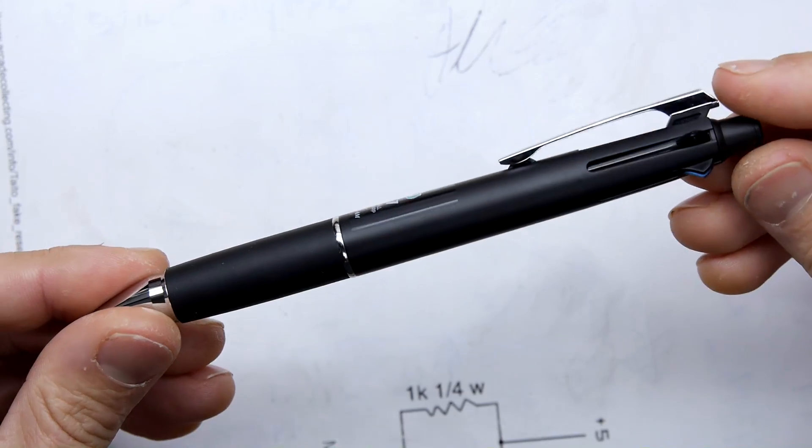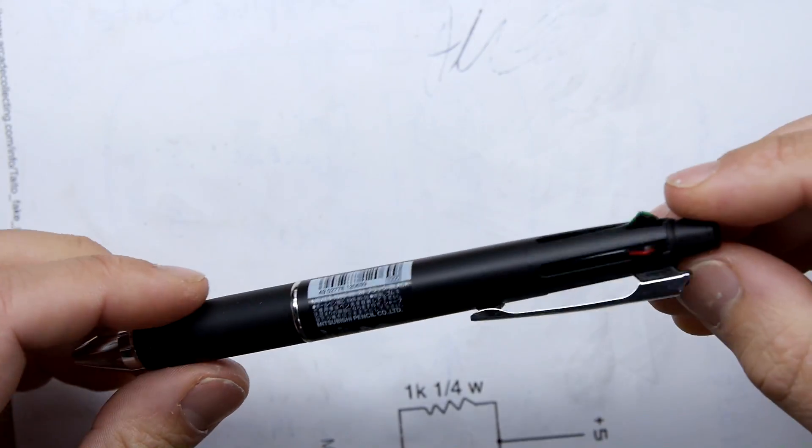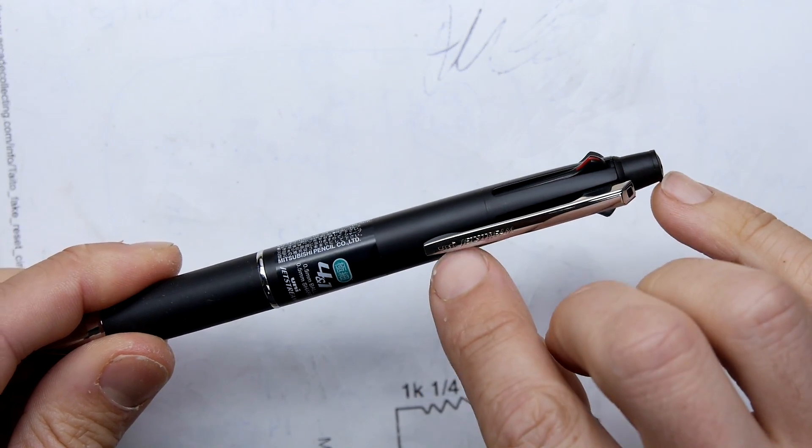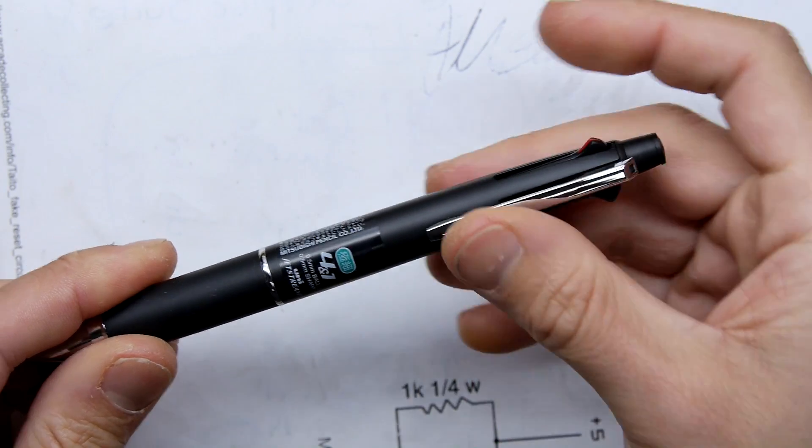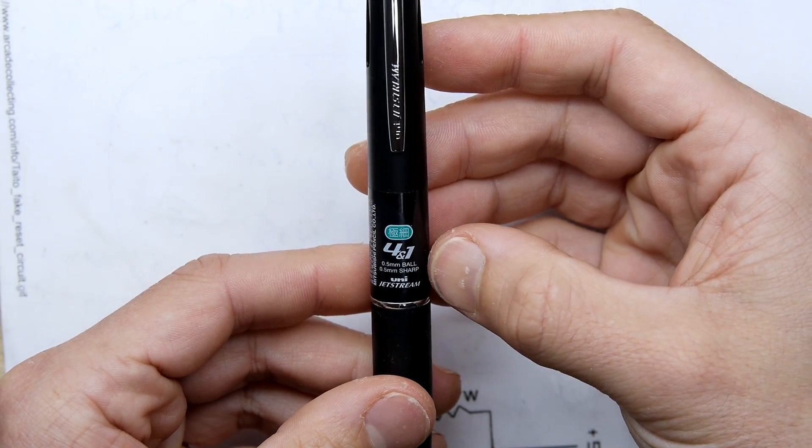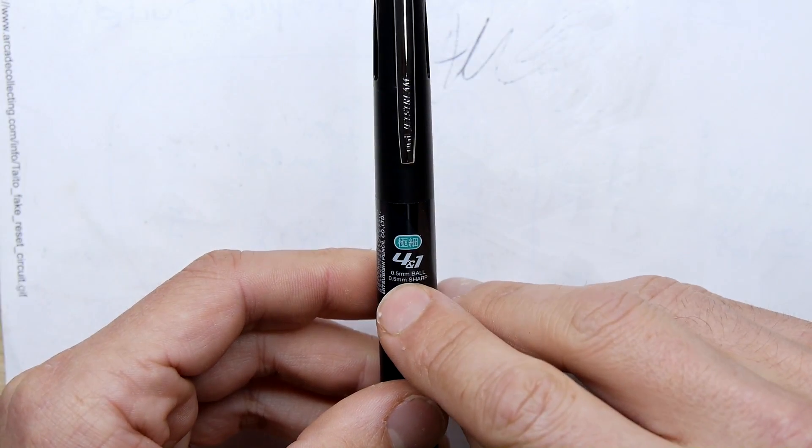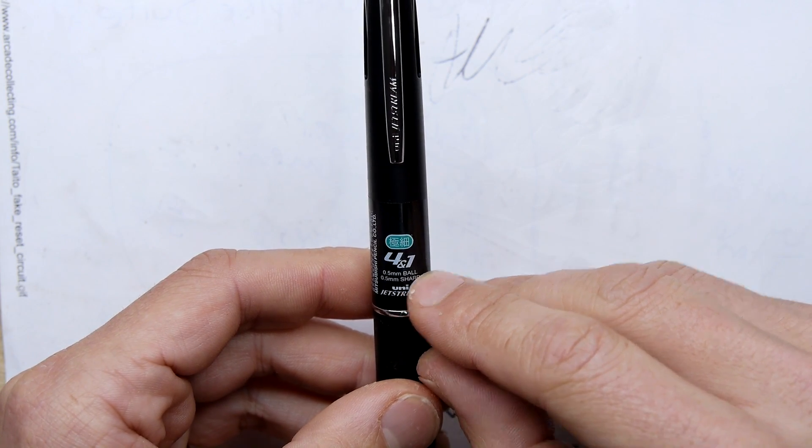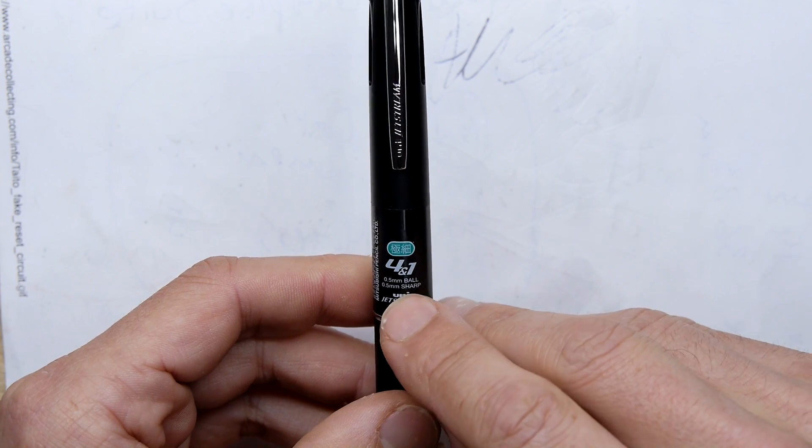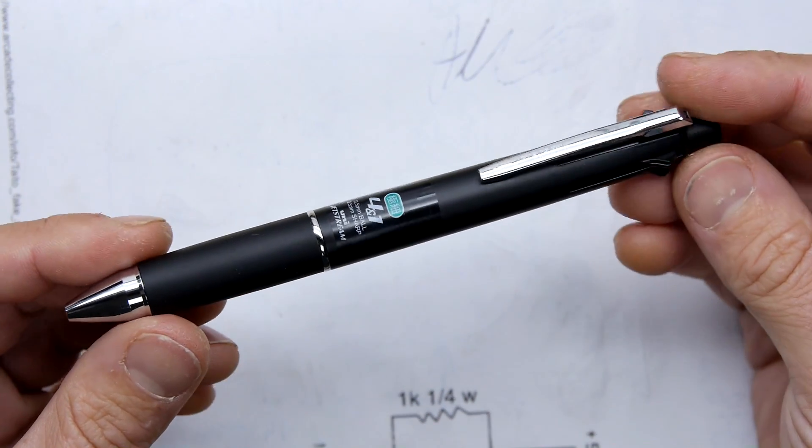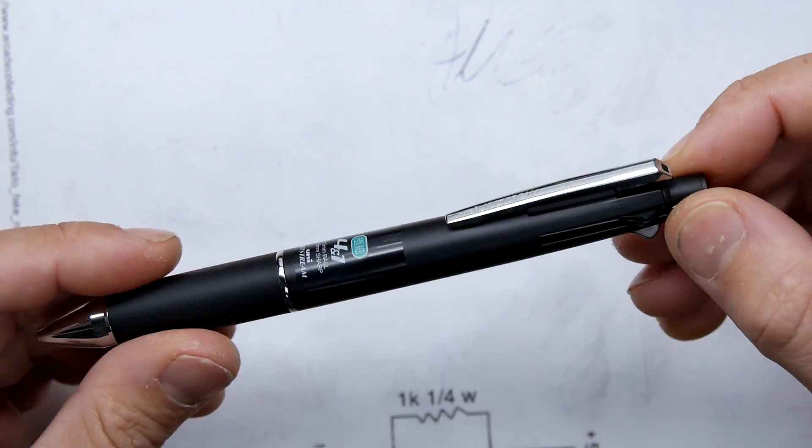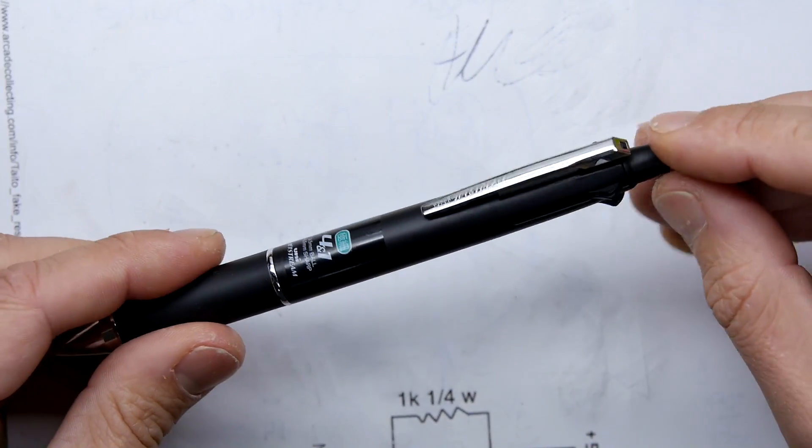It's not bad. Construction—you can see here it's a Mitsubishi Pencil Company, Uni Jetstream, and this is the four-and-one. The reason it's called the four-and-one: it's got 0.5 millimeter ball pens, four of them, and a 0.5 millimeter pencil. It says sharp here, and this is their new diamond lead pencil technology.